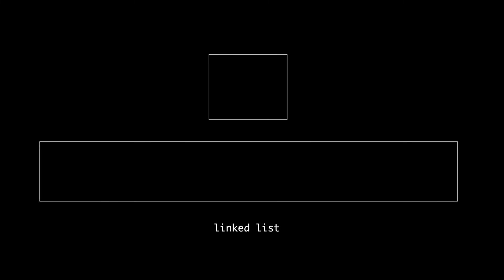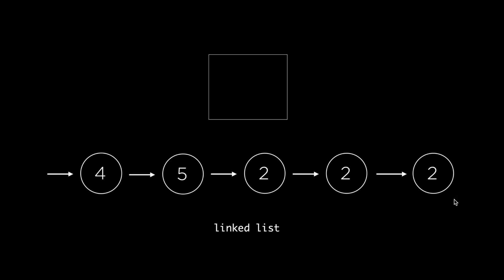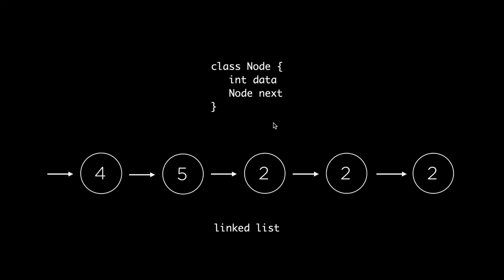In a previous video which I published a long time ago we learned the linked list data structure. It looked like this one where we had a bunch of nodes connected to each other in a single direction, and each node in the structure had a class called Node with two attributes: integer data, and next, which is also a node.